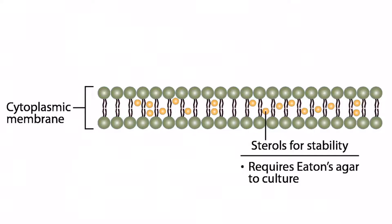Here's a figure depicting Mycoplasma. We can see it has that cytoplasmic membrane, and within it we can see these sterols, which give the cell the stability it needs. Since Mycoplasma species require sterols to live, you can really only culture them using Eaton's Agar, which provides those sterols. So if you want to culture Mycoplasma species, you need Eaton's Agar.